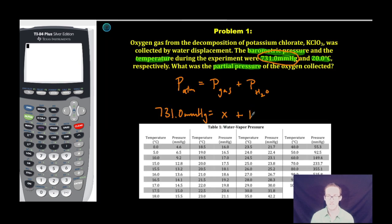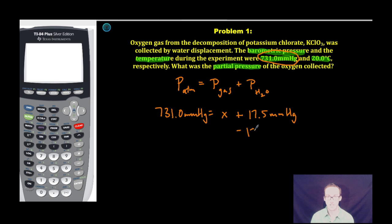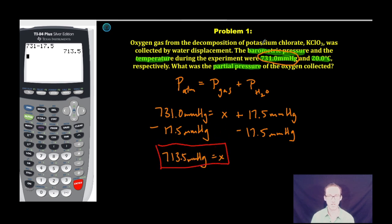So I simply plug that 17.5 millimeters mercury into my formula for Dalton's Law of Partial Pressures. A quick subtraction leads me to the partial pressure of the oxygen gas to be 713.5 millimeters mercury. Boom. Partial pressure, oxygen gas, and we're done.